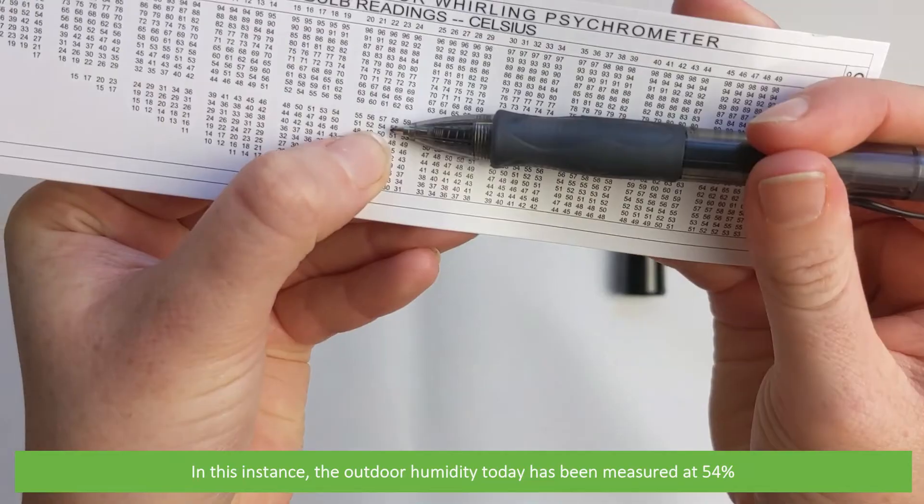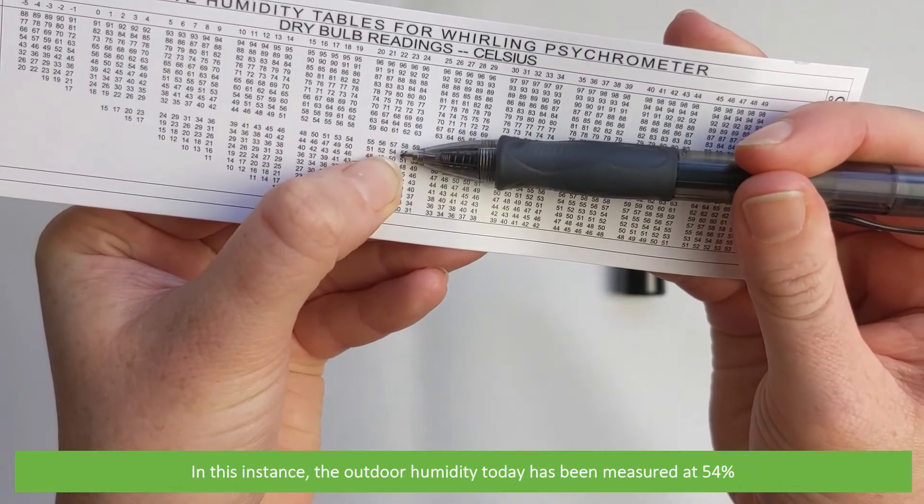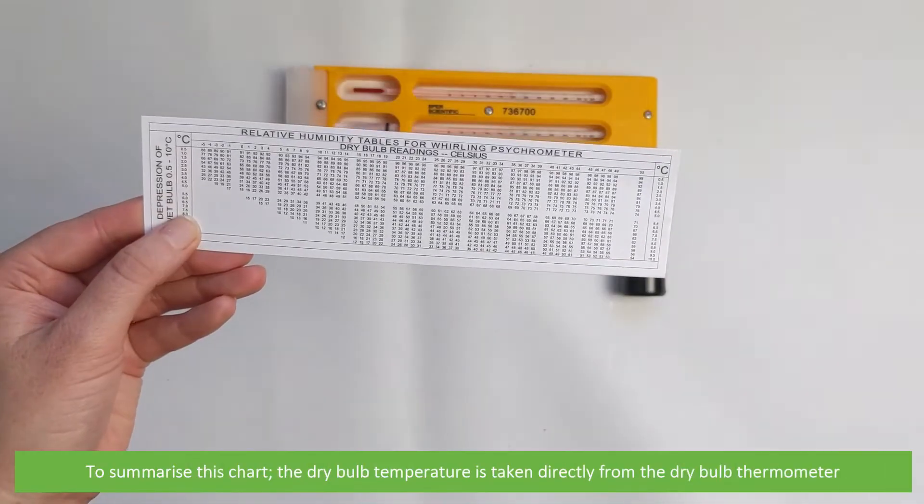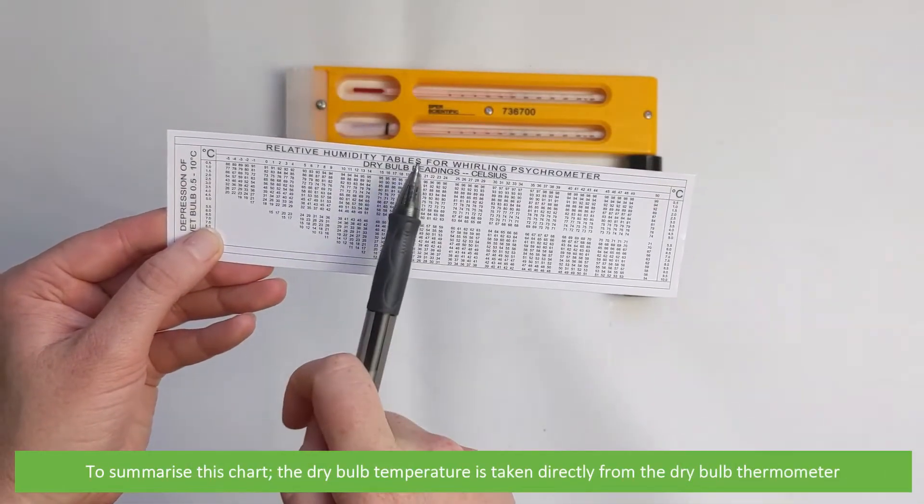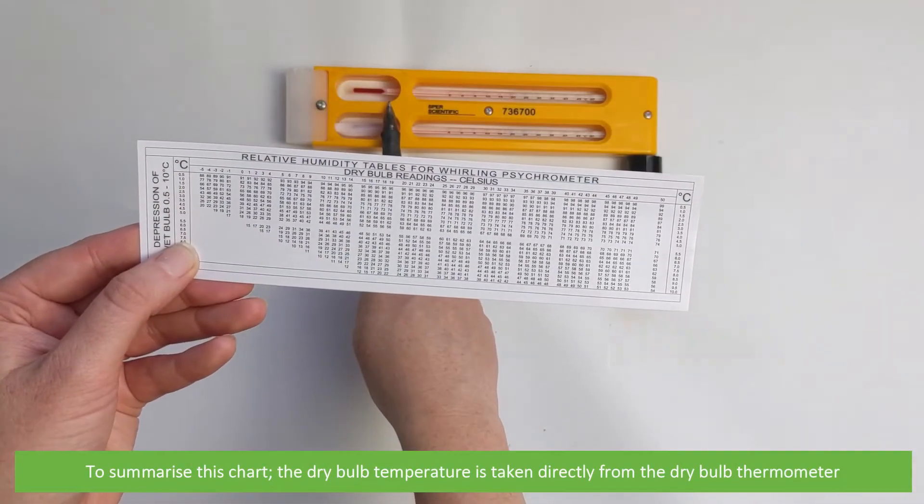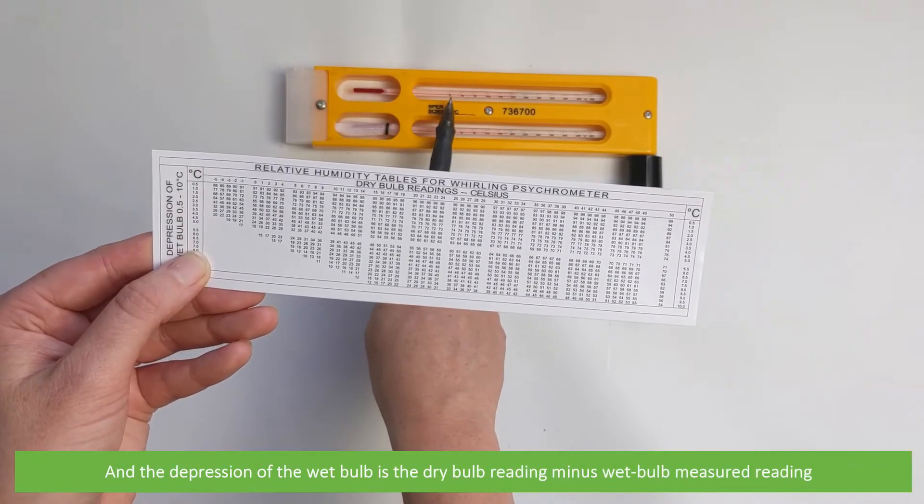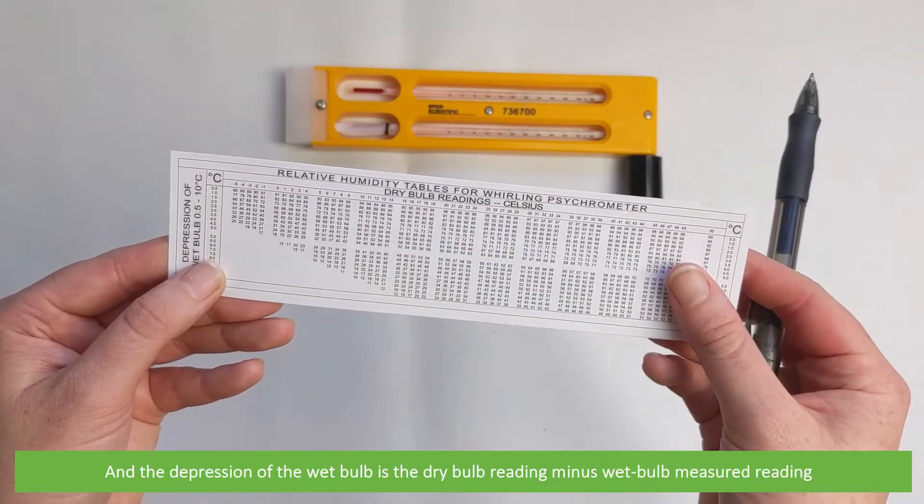In this instance, the outdoor humidity today has been measured at 54%. To summarize, the dry bulb temperature is taken directly from the dry bulb thermometer, and the depression of the wet bulb is the dry bulb reading minus the wet bulb measured reading.